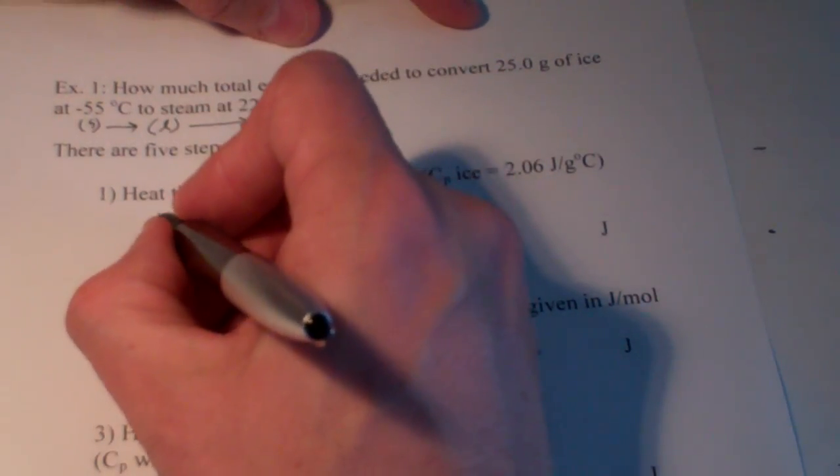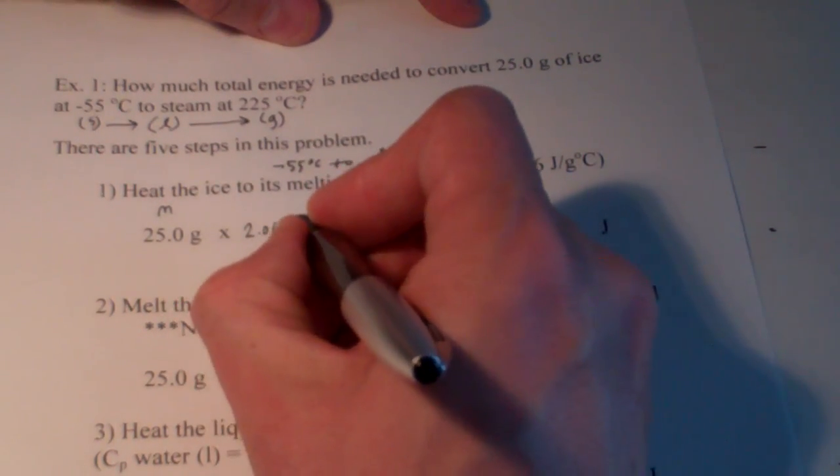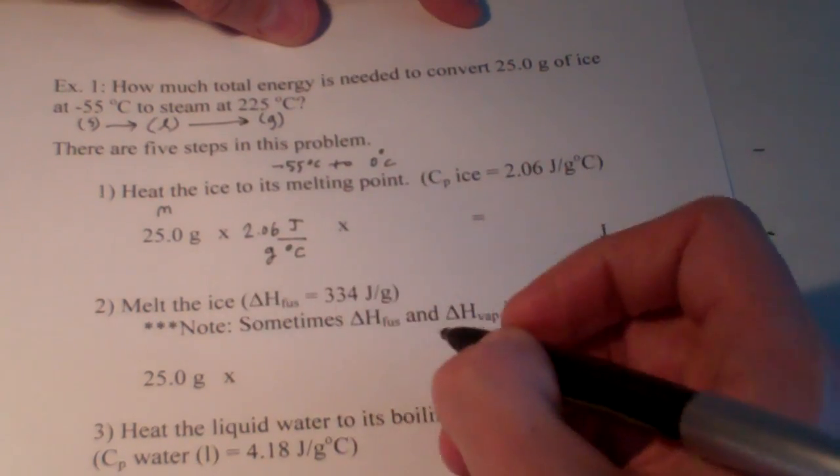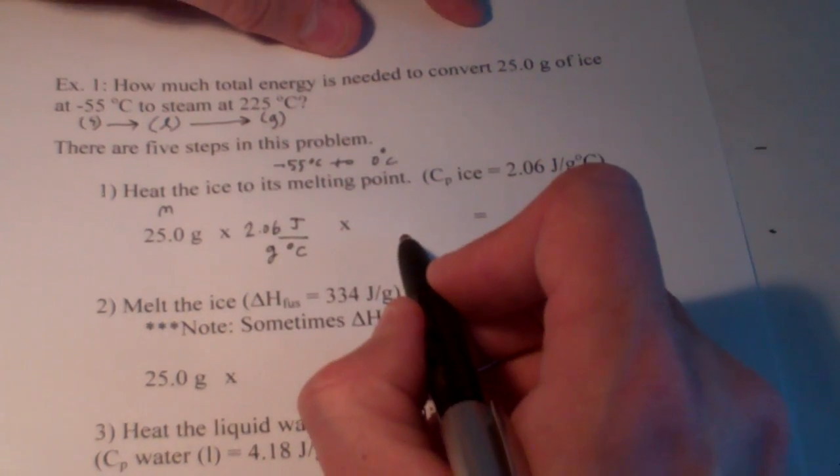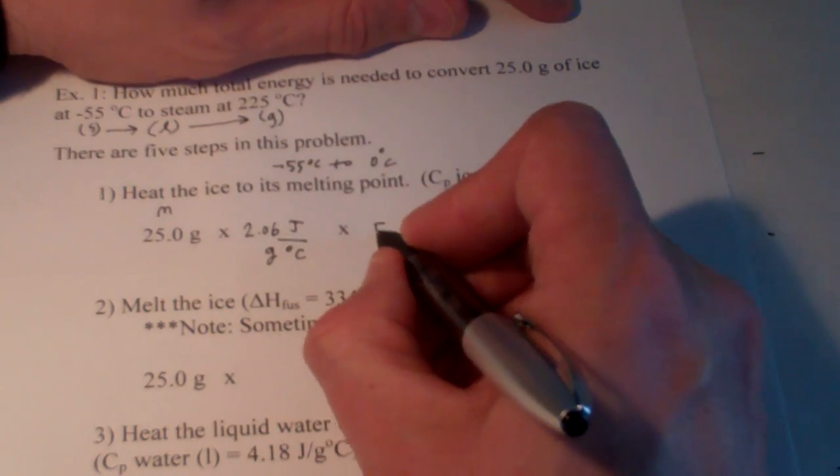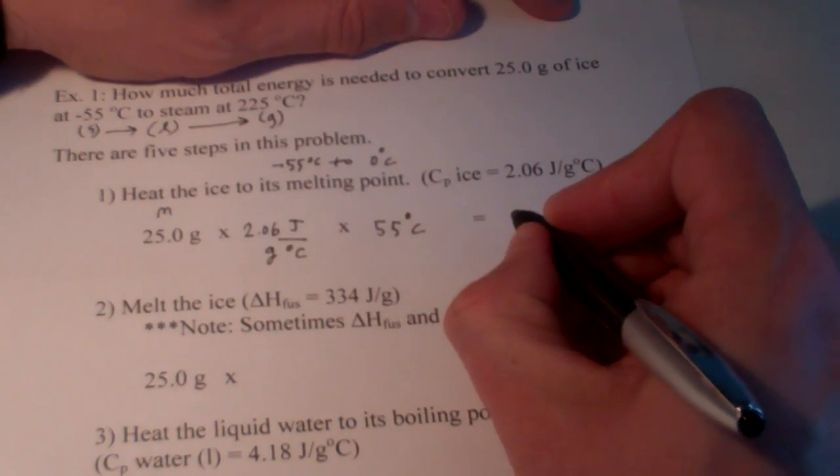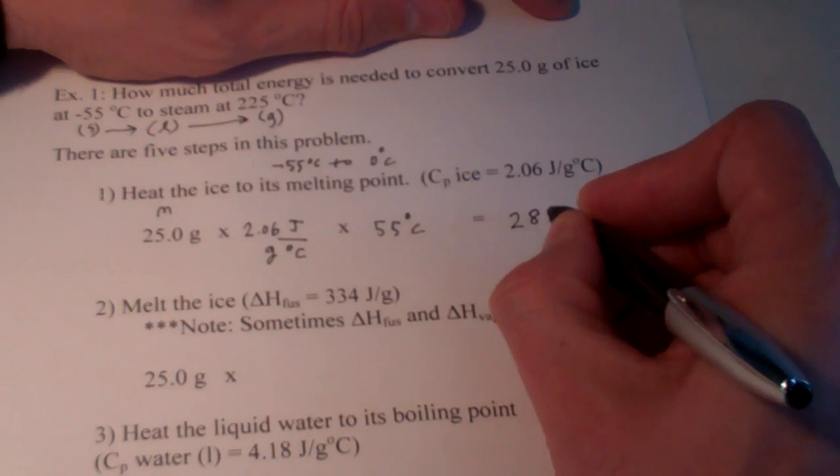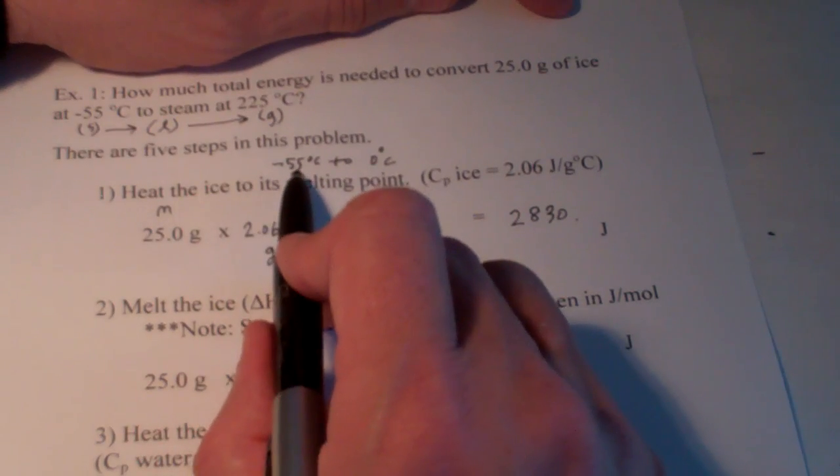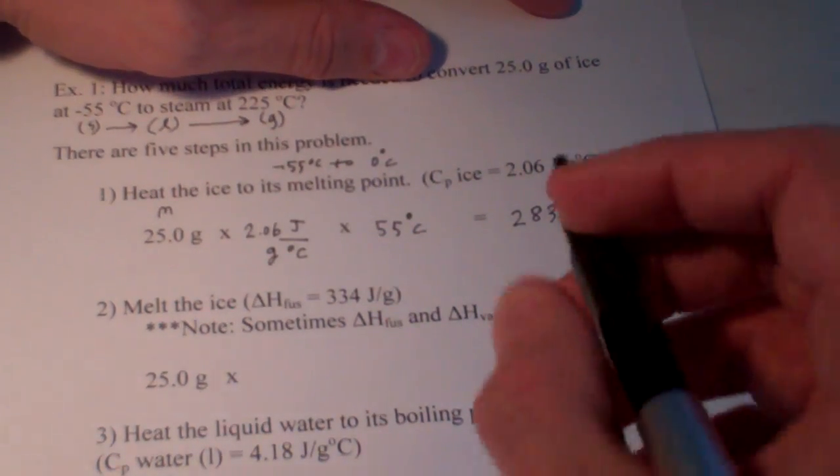So, we have 25 grams, that's our mass, times the specific heat of ice, 2.06 joules needed to raise the temperature of 1 gram of that substance by 1 degree Celsius, times my temperature change. Now, I'm going from negative 55 to 0. Isn't my temperature change 55 degrees Celsius? Now, I've done the math previous to this, and I actually rounded this off to 3 sig figs. I'm going to cheat a little bit and say that that's 55.0. I'm going to give myself 3 significant figures in that calculation.